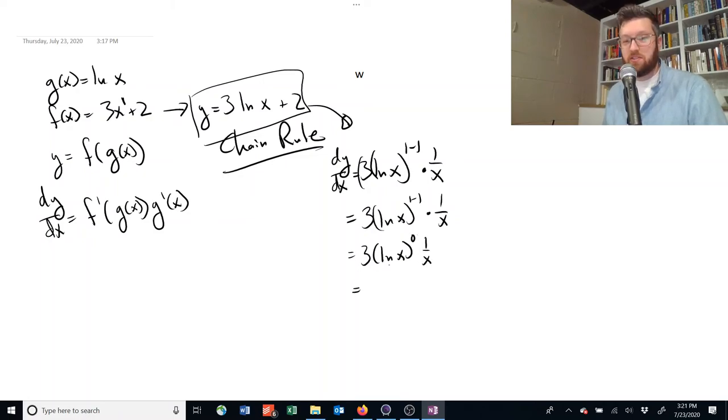Because if it's raised to the power of 0, it's telling us that you don't have any of whatever this thing is. So this is equal to 3 times 1 times 1 over x, or 3 times 1 over x.